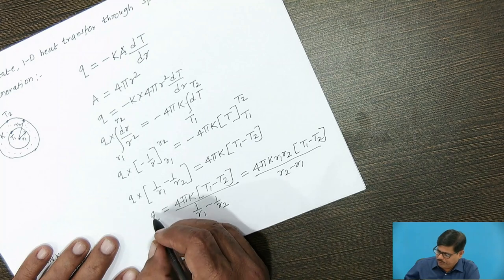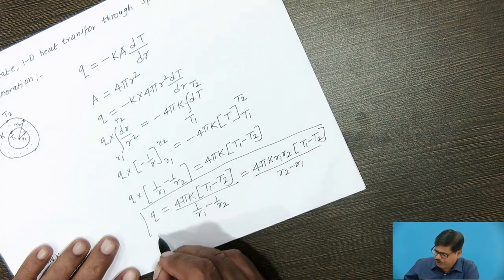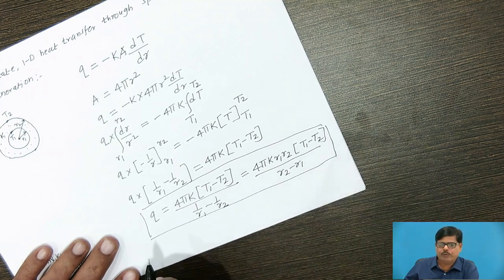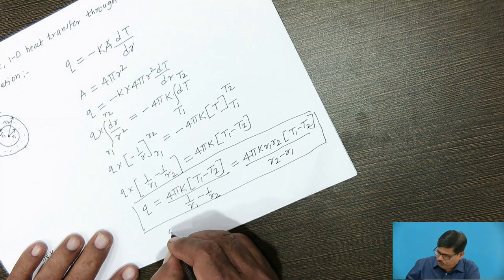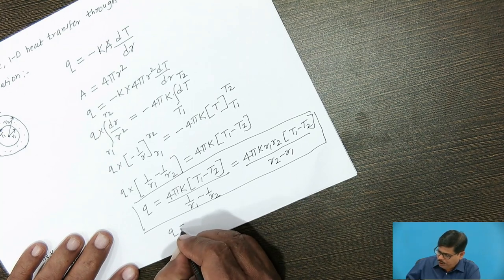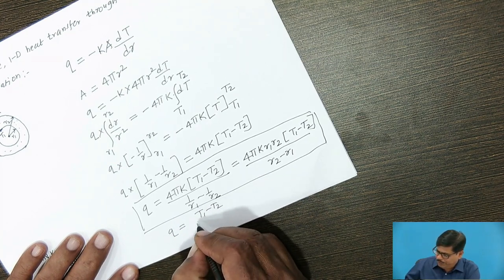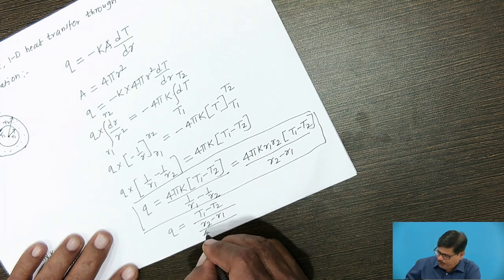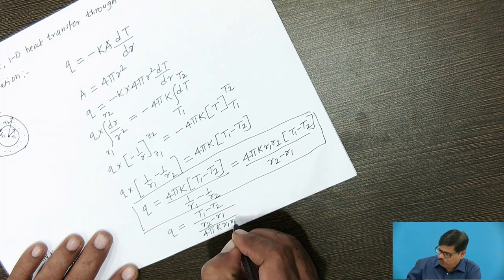This is the required equation for steady-state heat conduction through a hollow sphere of uniform thermal conductivity. We can rearrange it as Q = (T1 − T2) / [(r2 − r1) / (4πk·r1·r2)]. Now we have derived the heat flow rate equations for plane wall, cylinder, and sphere.